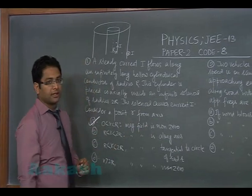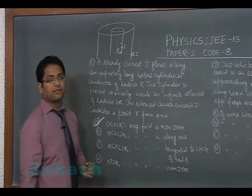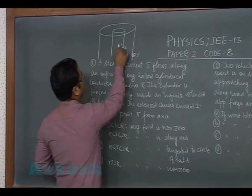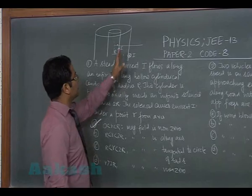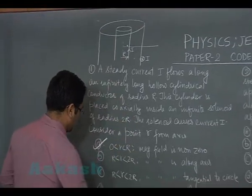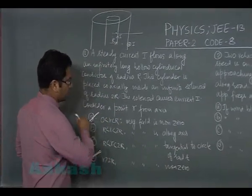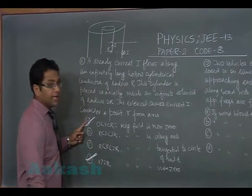For r greater than 2r, magnetic field is non-zero. That means we are here, and at this point the magnetic field due to the solenoid is zero, but due to the infinitely long conductor it's non-zero. Therefore option D would be correct. So altogether for question one we have answer as A and answer as D.